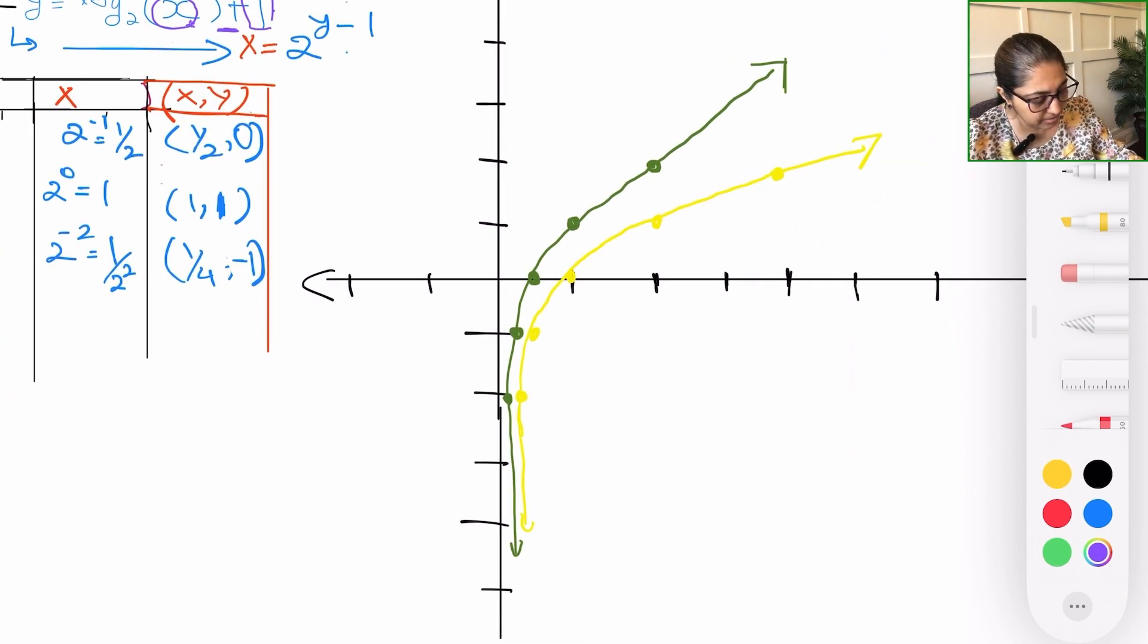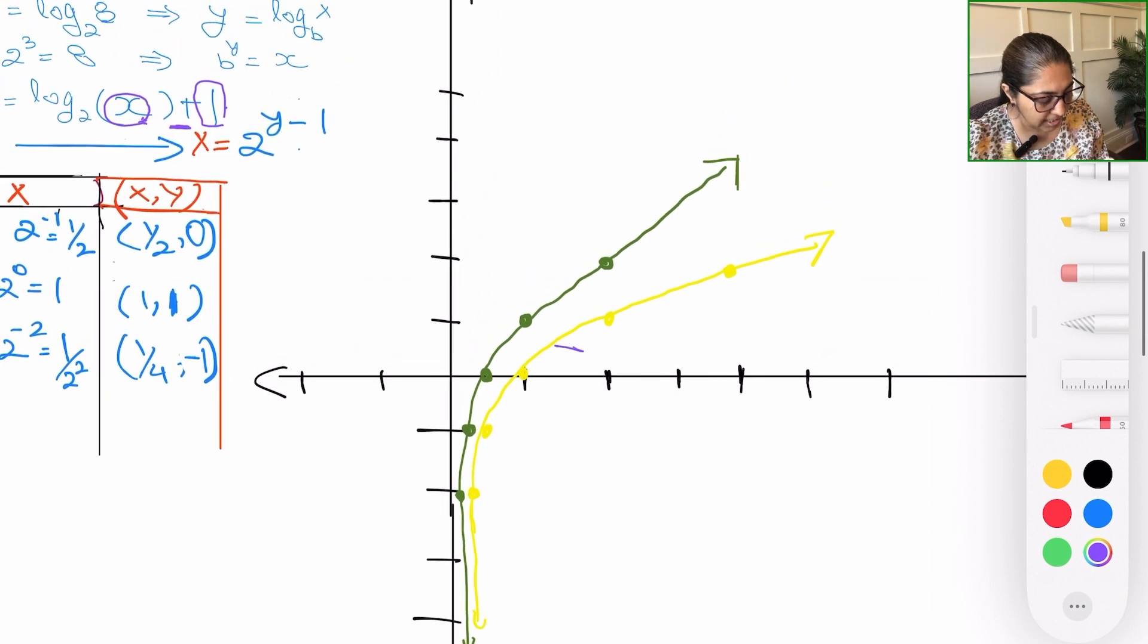But let's see the shapes first. So the parent function is given in yellow. As you can see, this is the parent shape for 2 power y. And we picked it up and took it one unit above. So when you take it one unit above, these are the values we get and the one in green is going to be that value.